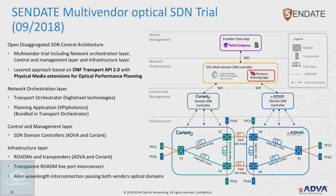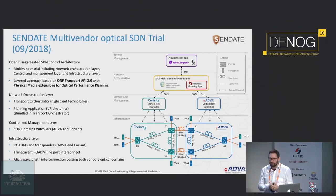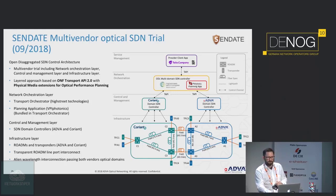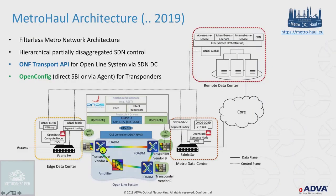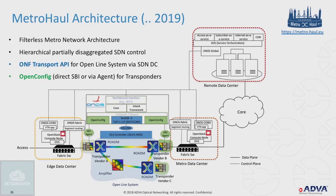Looking into the future, from the Metro Hall research project: we have an optical domain, transponders with their own agents using OpenConfig, a Transport API to configure the open line system, integrated in the open source SDN controller ONOS. Edge data centers and metro data centers are attached, and the whole setup is integrated into an orchestration environment with OpenStack and NFV open source MANO.